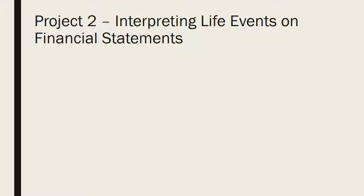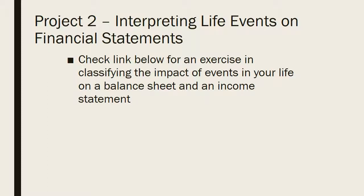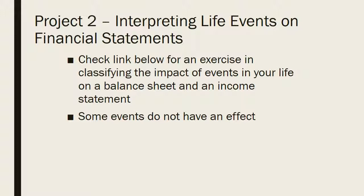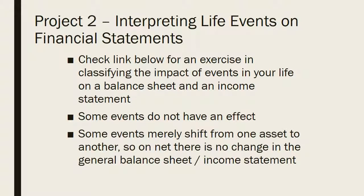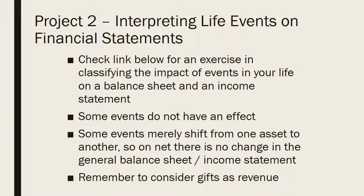Now that we've covered a balance sheet and income statements, you are ready to start tackling project two. There's a link below for an exercise where you'll be classifying the impact of events in your life. You'll be assigned some random events and need to show how each one individually affects your balance sheet and your income statement, and then show how your net worth has changed over that period — say a month. A couple things to remember: some events do not have any effect whatsoever on your financial statements. Some events merely shift from one asset to another, or one liability to a different liability, so in the general sense there's no change. And remember to consider gifts as revenue. Good luck — you can do it.